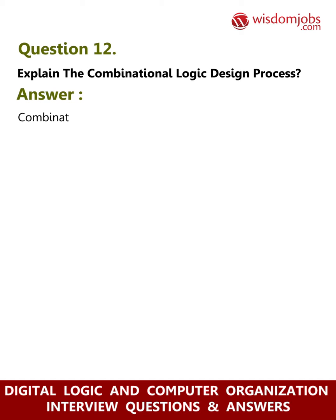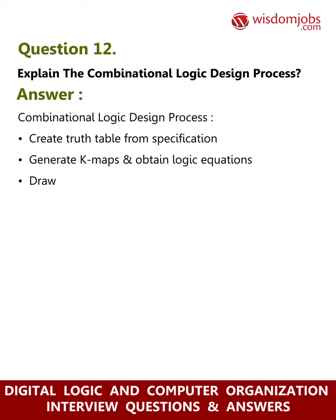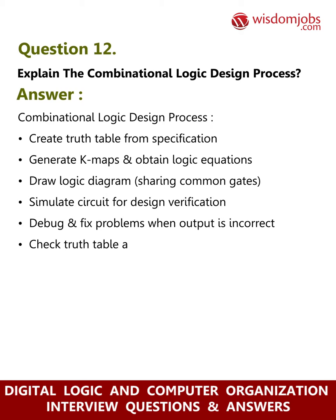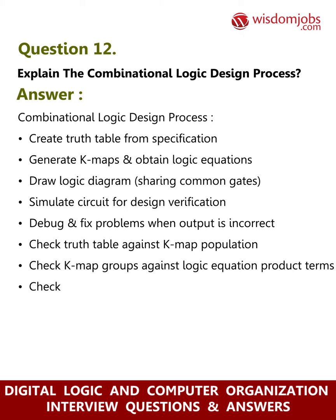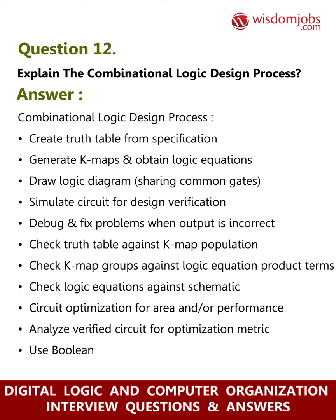Question 12: Explain the combinational logic design process. Answer: Create truth table from specification, generate K-maps and obtain logic equations, draw logic diagram, sharing common gates, simulate circuit for design verification, debug and fix problems when output is incorrect. Check truth table against K-map population, check K-map groups against logic equation product terms, check logic equations against schematic. For circuit optimization for area and/or performance, analyze verified circuit for optimization metric, use Boolean postulates and theorems, re-simulate and verify.